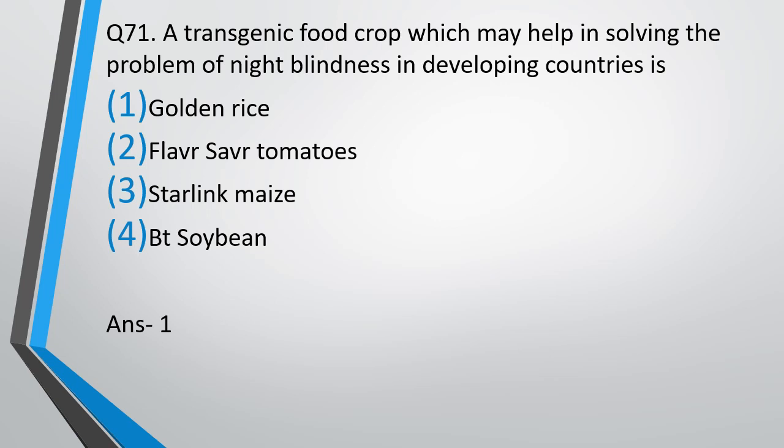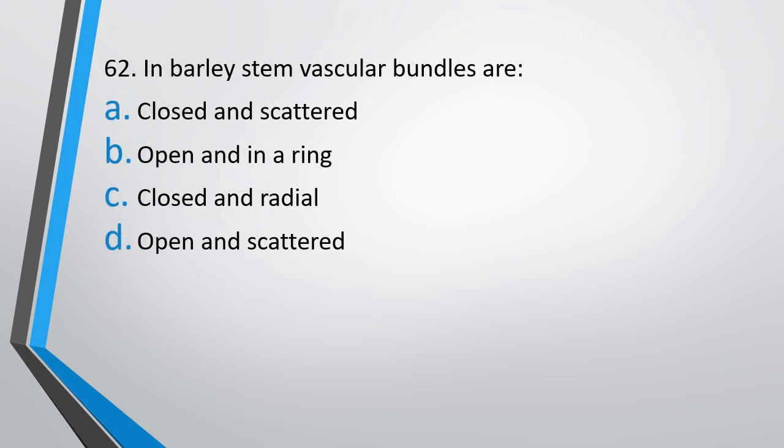If you give golden rice in developing countries where there is prevalence of night blindness, the deficiency of vitamin A would be solved. Remember, questions in NEET won't be direct — they would be indirectly asked, testing whether you know that night blindness is caused by a vitamin deficiency. Question No. 62. In barley stem, vascular bundles are: closed and scattered, open and in a ring, closed and radially arranged, or open and scattered. The correct answer is option A — they are closed and scattered.